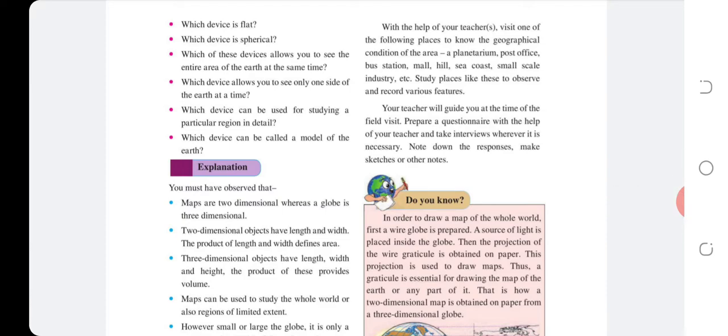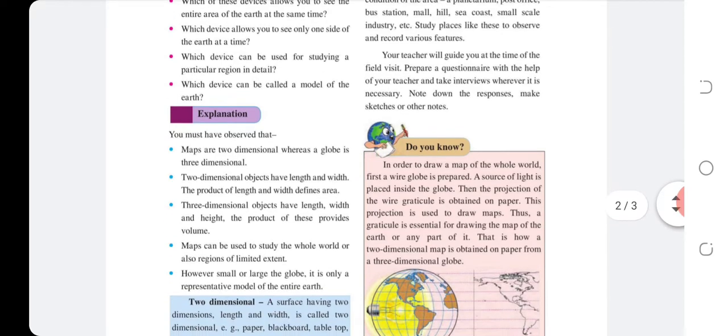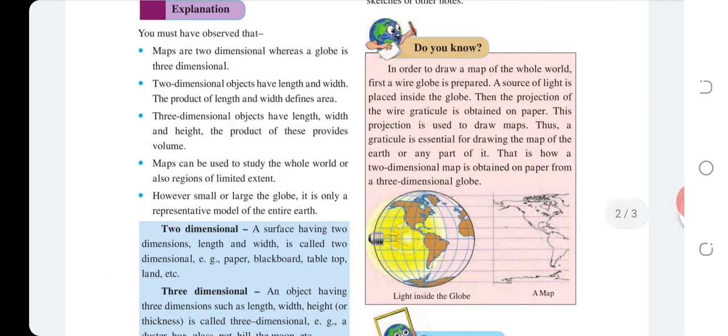Explanation: You must have observed that maps are two-dimensional whereas a globe is three-dimensional. Two-dimensional objects have length and width; the product of length and width defines area. Three-dimensional objects have length, width, and height; the product of these provides volume. Maps can be used to study the whole world or regions of limited extent. However, small or large, a globe is only a representative model of the entire Earth.